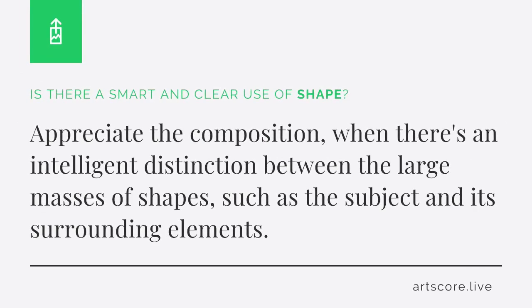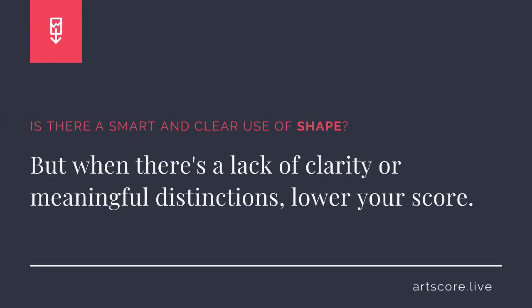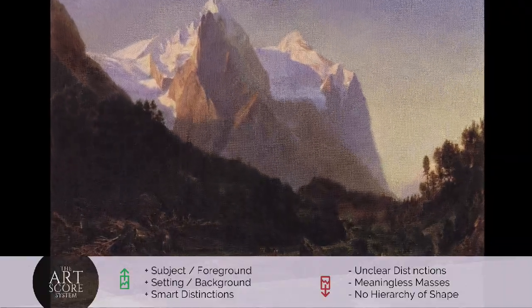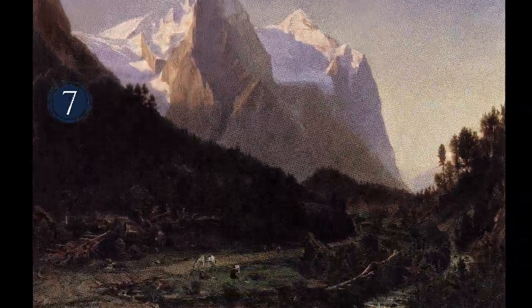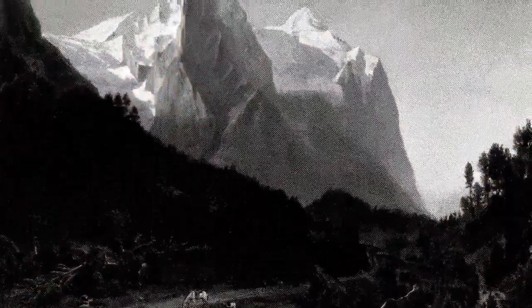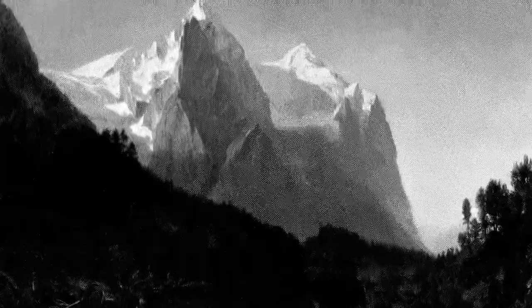Shape. Is there a smart and clear use of shape? Appreciate the composition when there's an intelligent distinction between the large masses of shapes, such as the subject and its surrounding elements. But when there's a lack of clarity or meaningful distinctions, lower your score. I scored the artwork a 7. I see the distinctions between the foreground and background elements. What's your score?